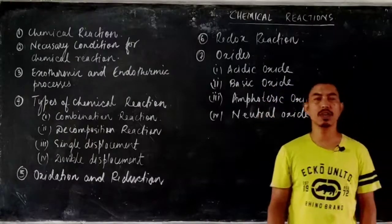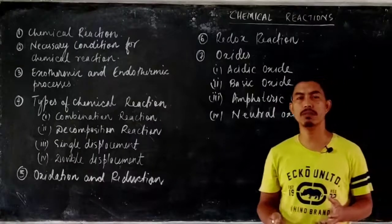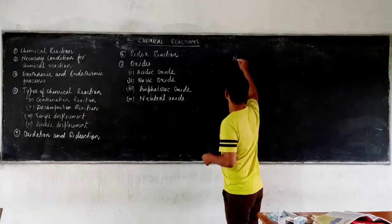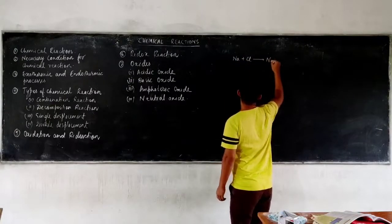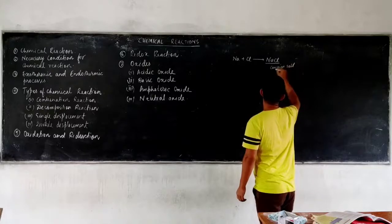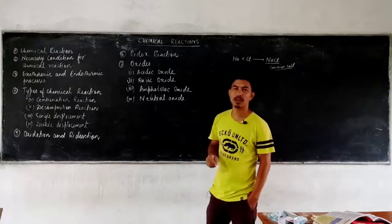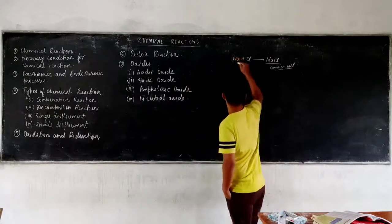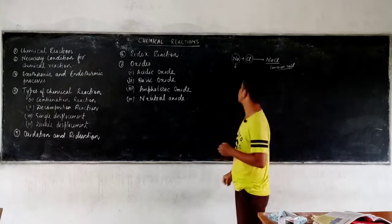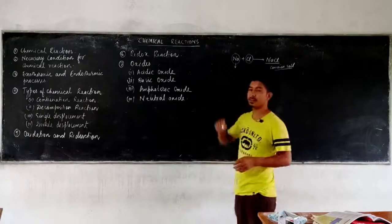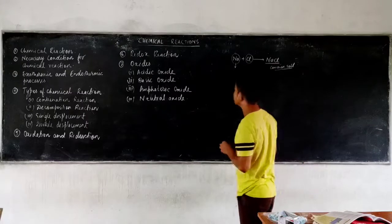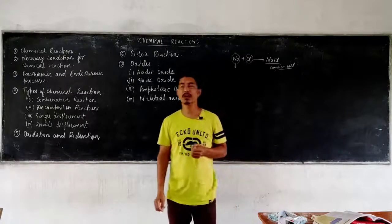A chemical reaction is one which is irreversible, in which two elements or compounds combine to form a completely new substance. For example, sodium reacts with chlorine to give sodium chloride — common salt. Sodium is a very dangerous, explosive metal that explodes on contact with water or moisture, and chlorine is a very poisonous gas. Yet their combination produces something which is neither explosive nor poisonous.